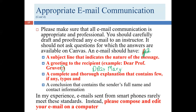If you absolutely must send an email from a smartphone, read it many times, have someone else check it, and remove the 'Sent from an iPhone' signature. That line communicates to the recipient that you couldn't be bothered to spend real time on it — a very negative message. You want to motivate the recipient to help you, and that signature is one of the least motivating things you can do.